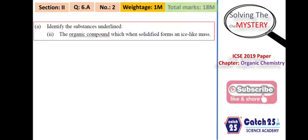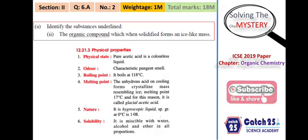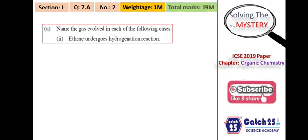The next question asks to identify the substance: the organic compound which, when solidified, forms an ice-like mass. This is a straightforward textbook question — the answer is pure acetic acid (glacial acetic acid). This gives one more mark, bringing the total to 18 marks.